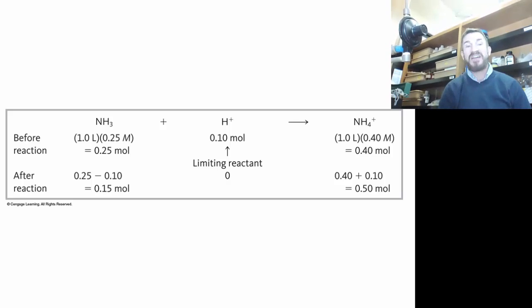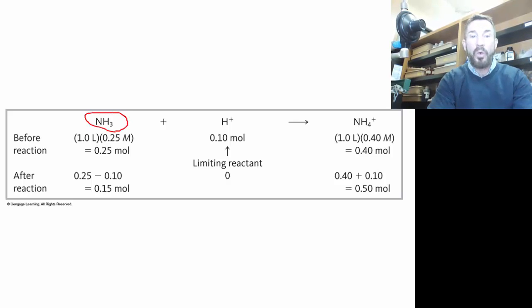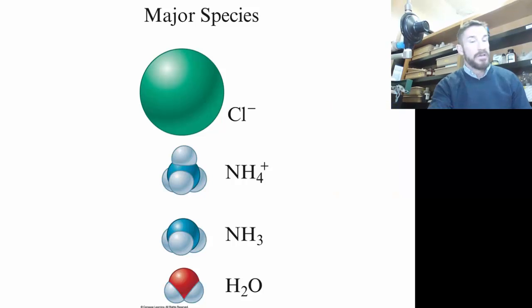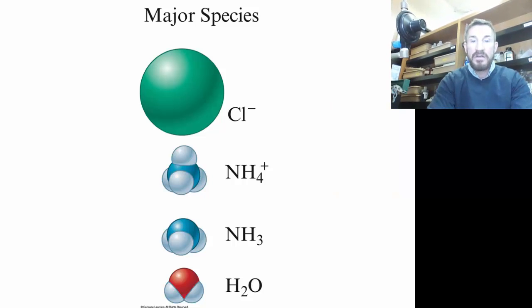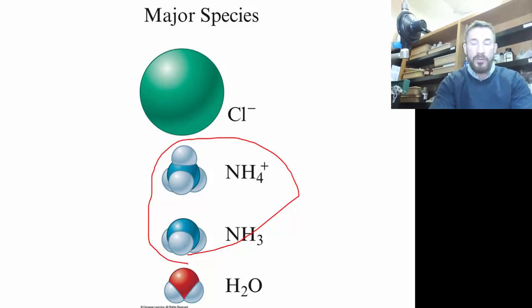These are a couple of things that show how to make a buffer - from excess weak base and limiting strong acid. That limiting strong acid is used up completely. At the end, we're left with ammonia and ammonium, so we have a buffer. Notice the major species at the end - weak base and its conjugate acid are both present. That is definitely a buffer.